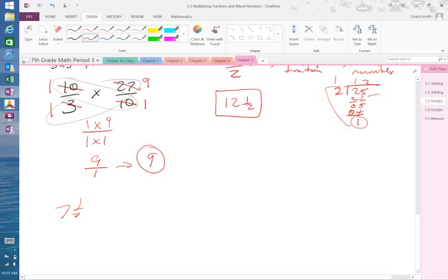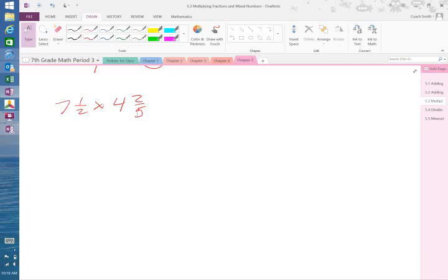I want you to do this one on your own. 7 and 1 half times 4 and 2 fifths. Raise your hand when you have the answer.